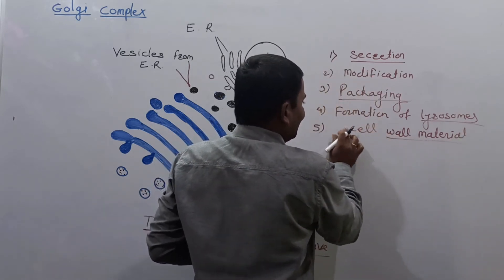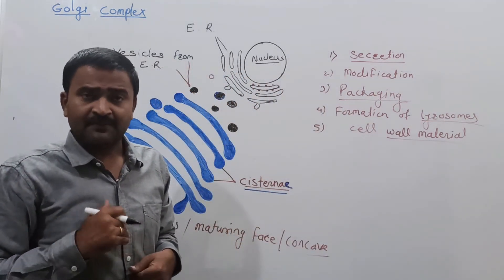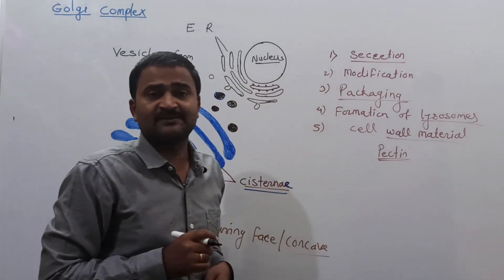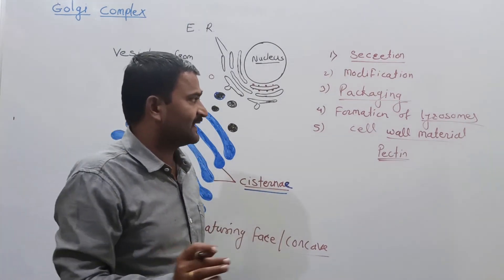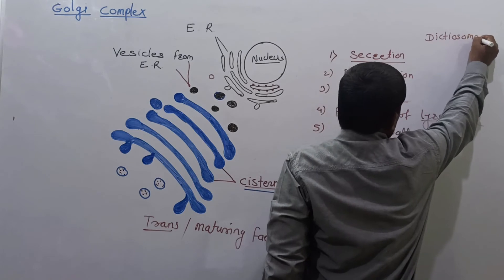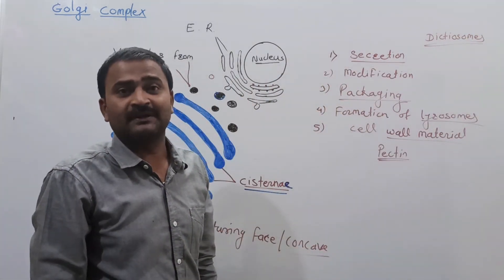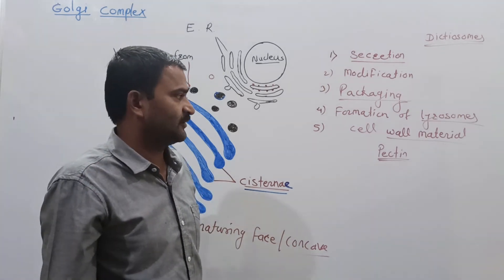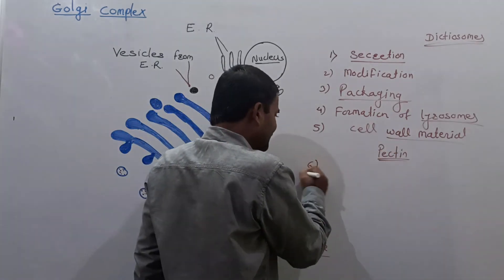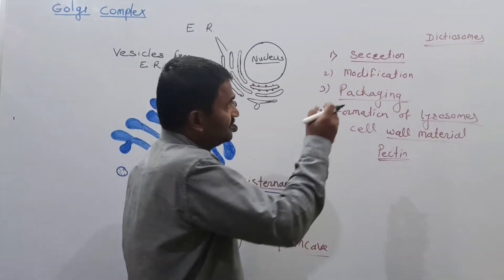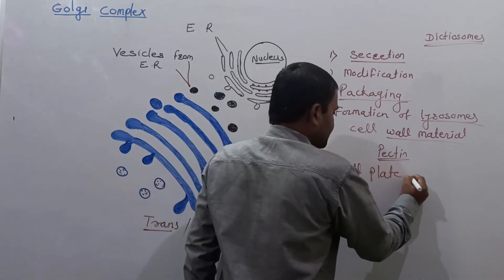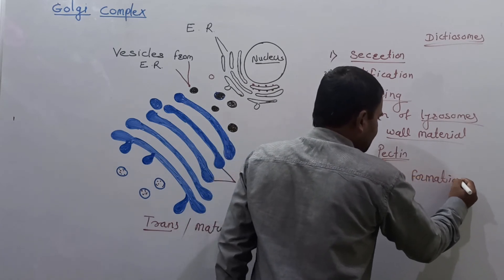For example, polysaccharides are synthesized by the Golgi complex for use in cell wall formation. In plant cells, the Golgi apparatus is called dictyosomes. Dictyosomes are the Golgi complexes or Golgi apparatus present in plant cells, and they synthesize cell wall materials and are involved in cell plate formation.